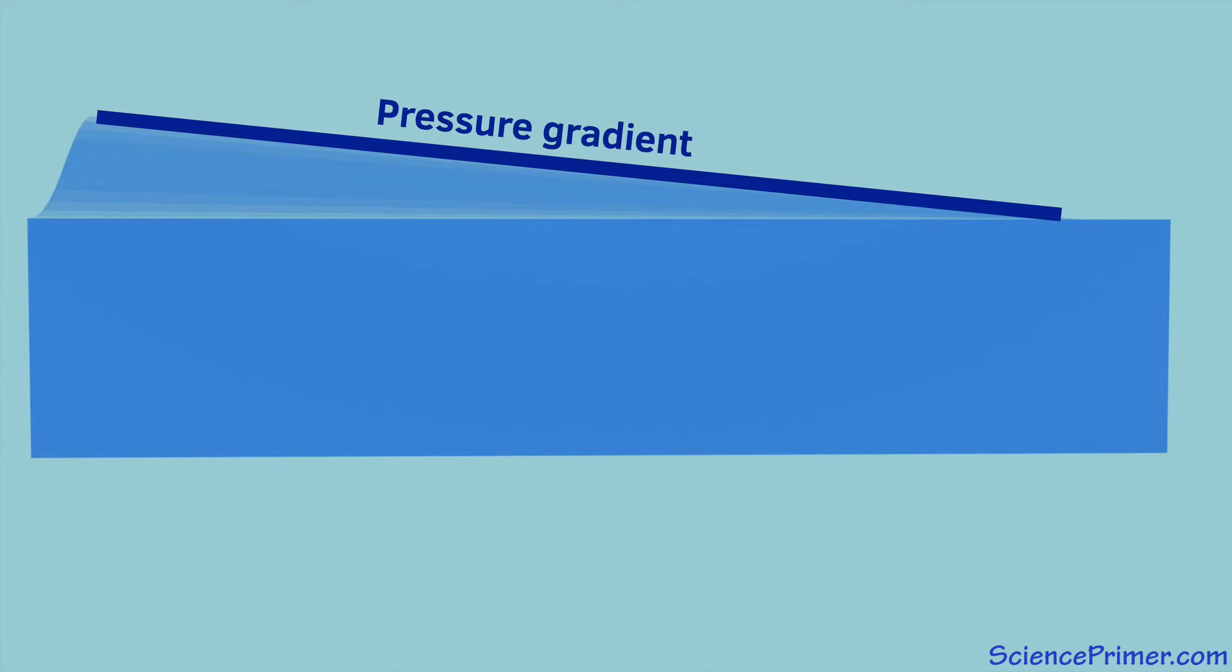Not all of the water flowing east in reaction to the pressure gradient flows along the surface. An additional current called the equatorial undercurrent forms right along the equator at the bottom of the mixed layer along the thermocline.